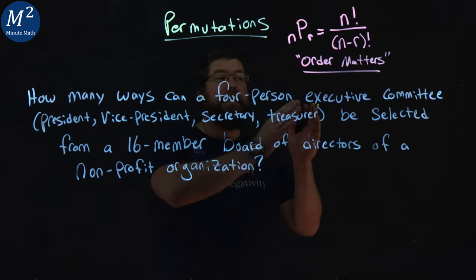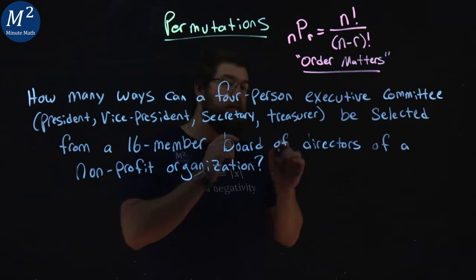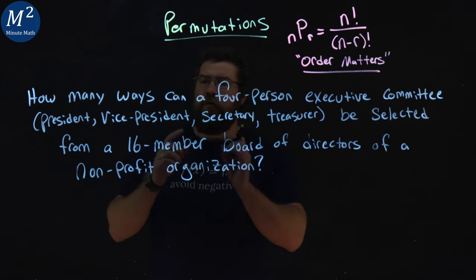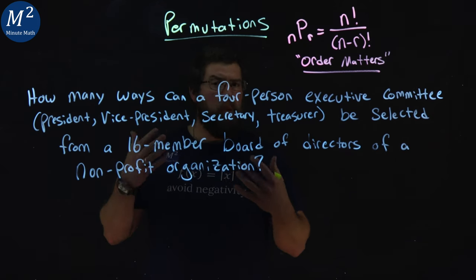How many ways can a four-person executive committee - president, vice president, secretary, and treasurer - be selected from a 16-member board of directors of a non-profit organization?